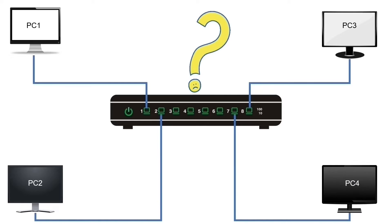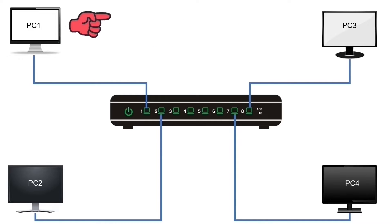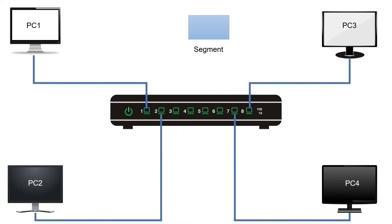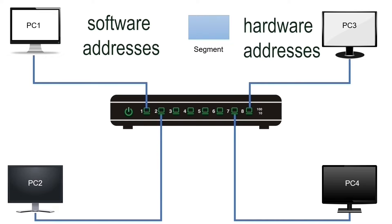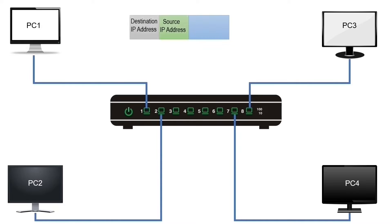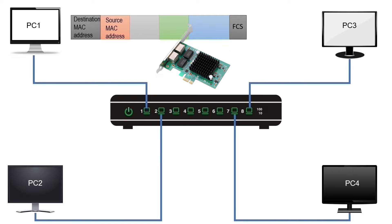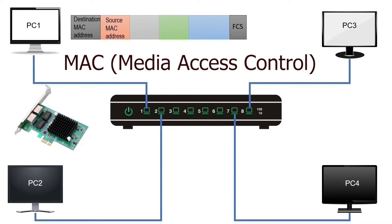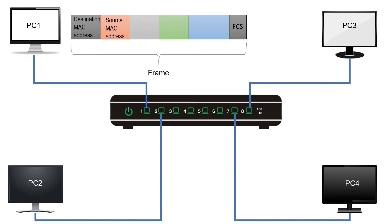Let us understand this process through an example. When a PC wants to send a data stream, it breaks the data stream into small pieces known as segments. There are two types of addresses: software addresses and hardware addresses. The device needs to attach both types of addresses to each segment. It first adds software addresses, also known as IP addresses. A segment with IP addresses is known as a packet. After adding the software addresses, the device attaches the hardware addresses, also known as MAC addresses. A packet with MAC addresses is known as a frame.